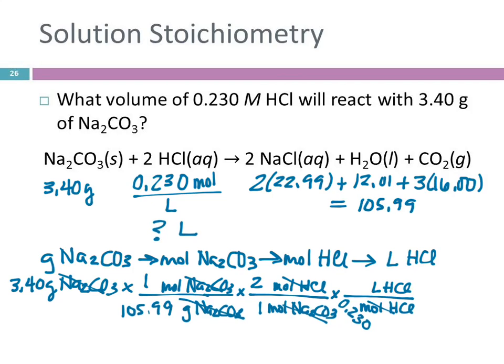I've got everything in place. I go left to right, multiply by the top, divide by the bottom. 3.4 times 1 divided by 105.99 times 2 divided by 1 times 1 divided by 0.23.